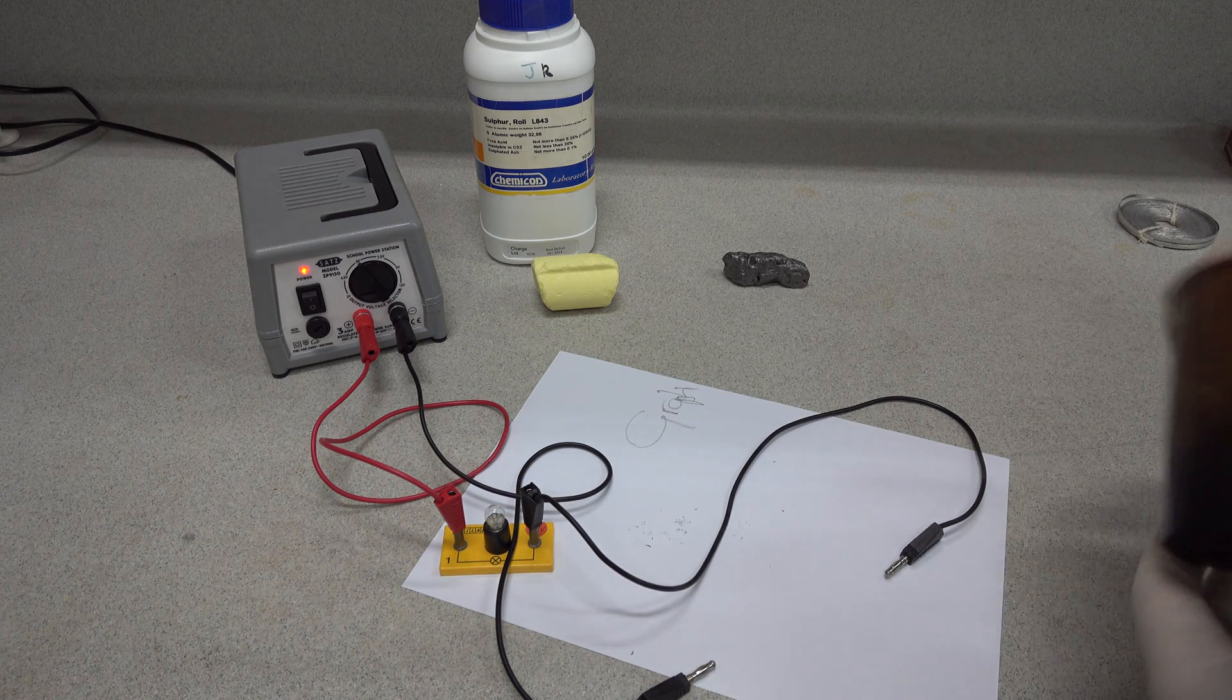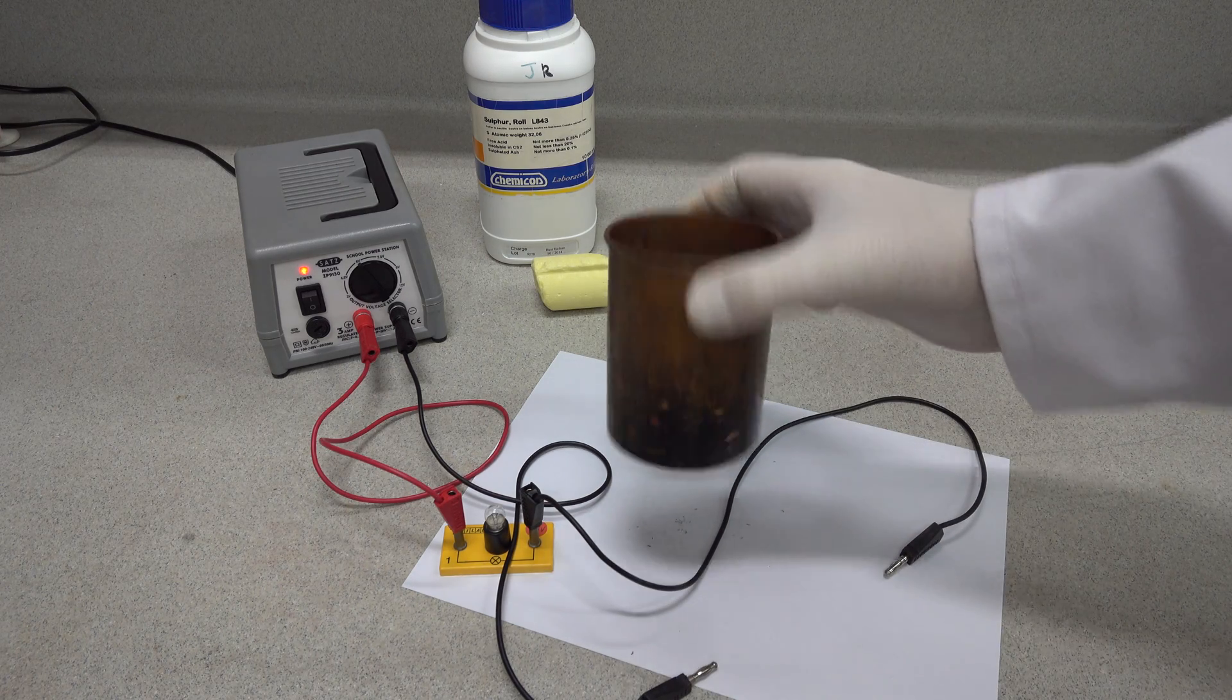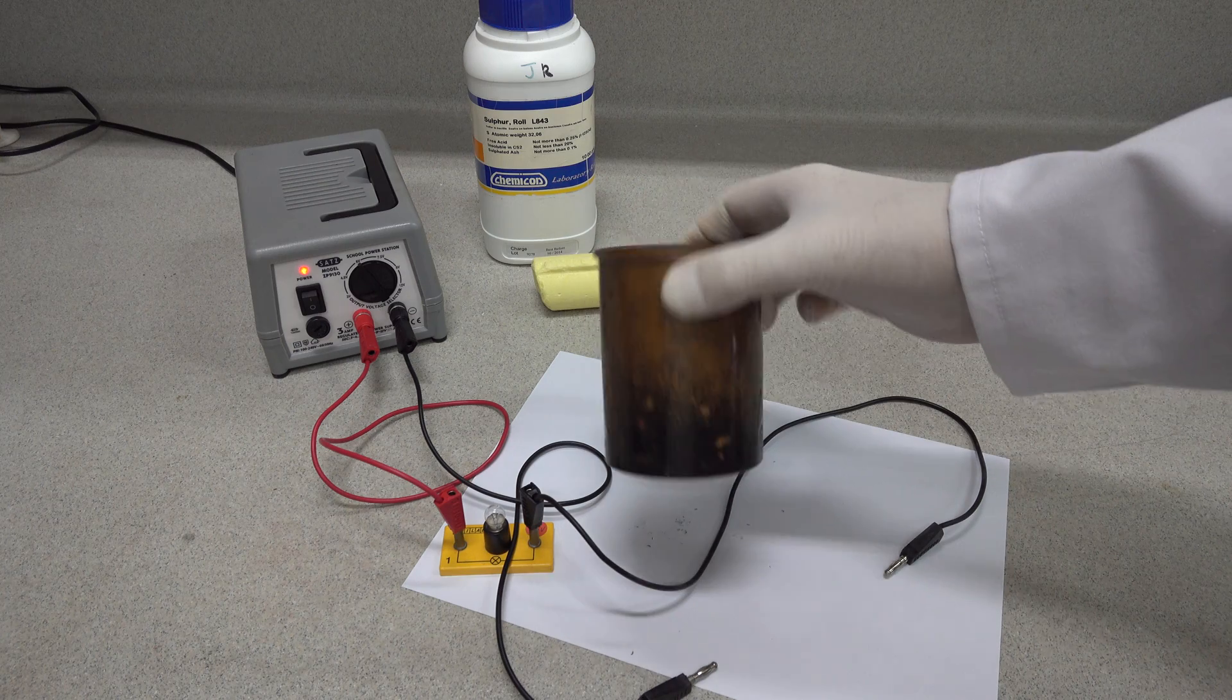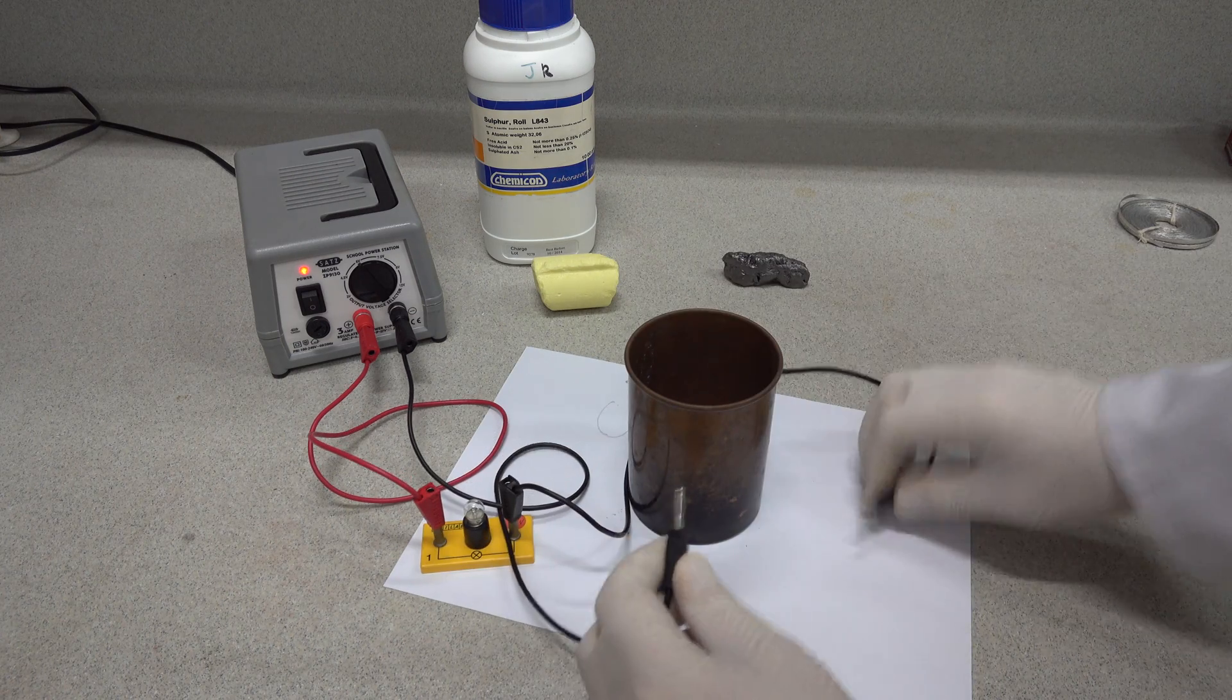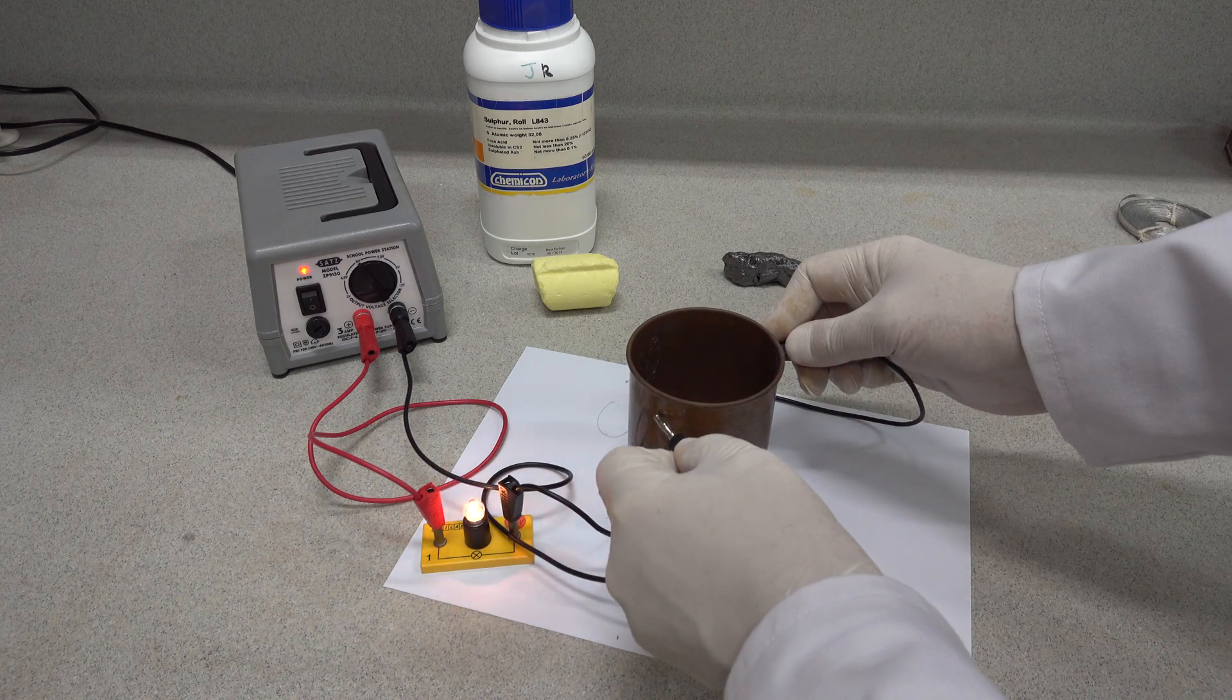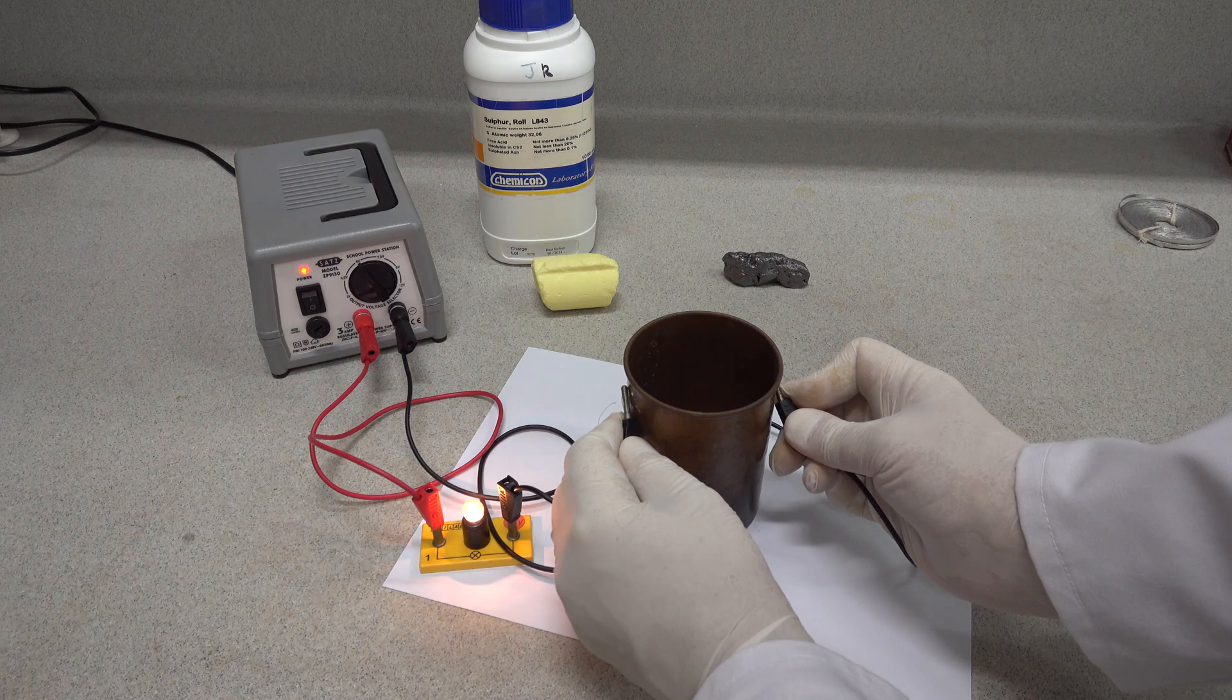Our next element is some copper. This one has been moulded into a copper can that we use in calorimetry experiments. So does the copper conduct electricity? And you can see it does conduct electricity again rather well.